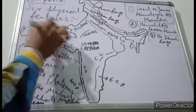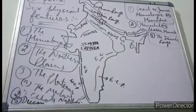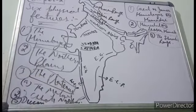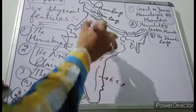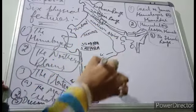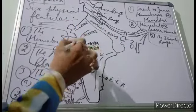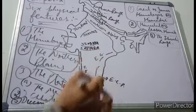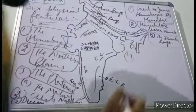So far we have discussed three physical features: first, the Himalayas with three parts; second, the Northern Plains from Punjab to West Bengal; and third, the Plateau region. The plateaus begin from the Aravallis and extend to the southern parts of India. This region is divided into the Malwa Plateau, the Chota Nagpur Plateau, and the Deccan Plateau — the whole large lower region being the Deccan Plateau.